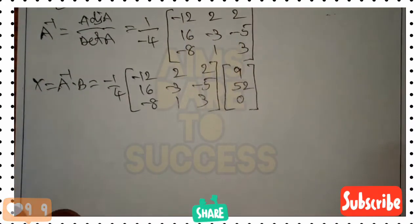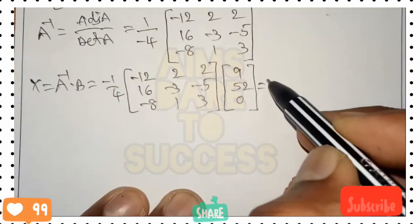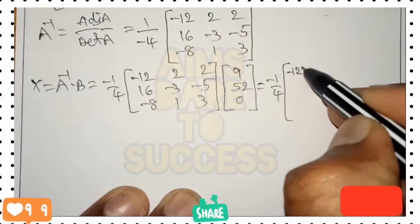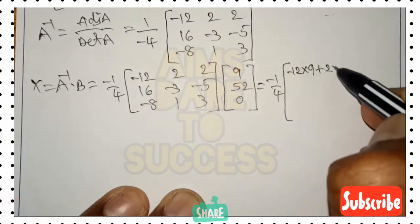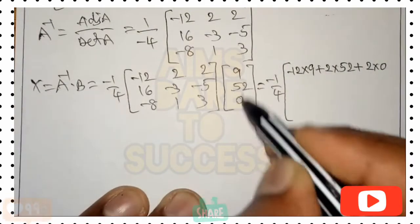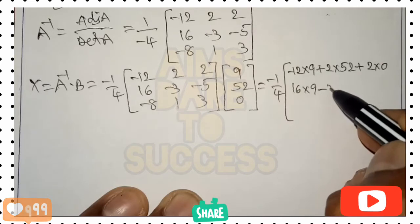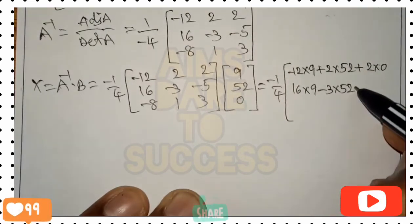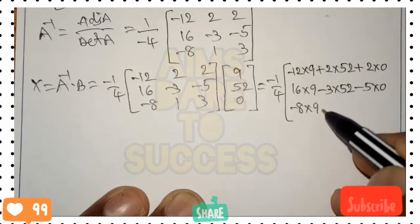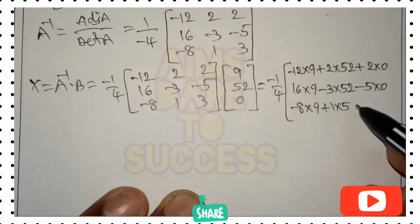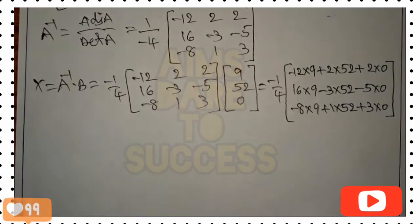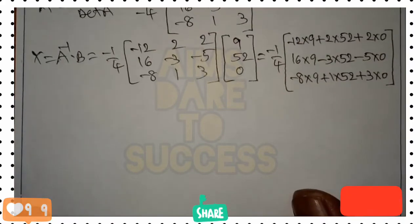Performing the row-column multiplication: first row: (-12×9) + (2×52) + (2×0). Second row: (16×9) + (-3×52) + (-5×0). Third row: (-8×9) + (1×52) + (3×0). After computing each row product, we then multiply by (-1/4).